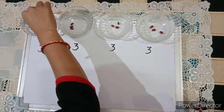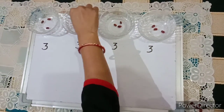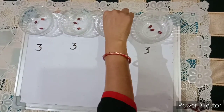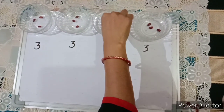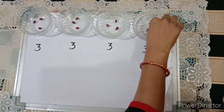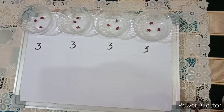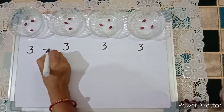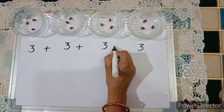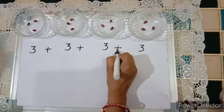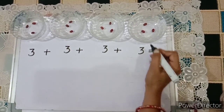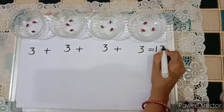Count: 1, 2, 3, 4, 5, 6, 7, 8, 9, 10, 11, 12. So 3 plus 3 plus 3 plus 3 plus 3 is equals to 12 beans.